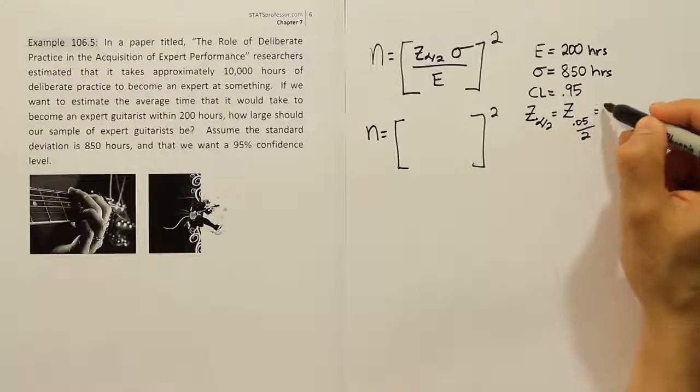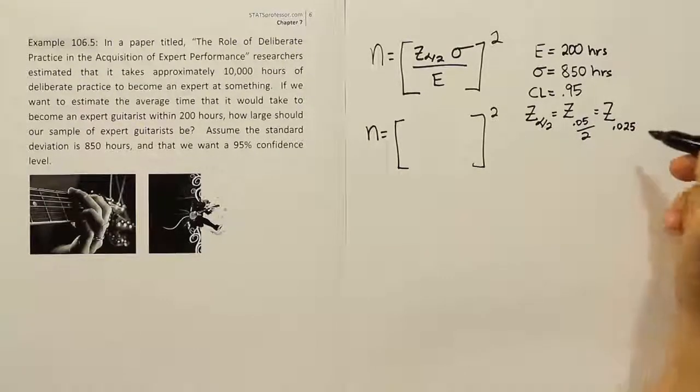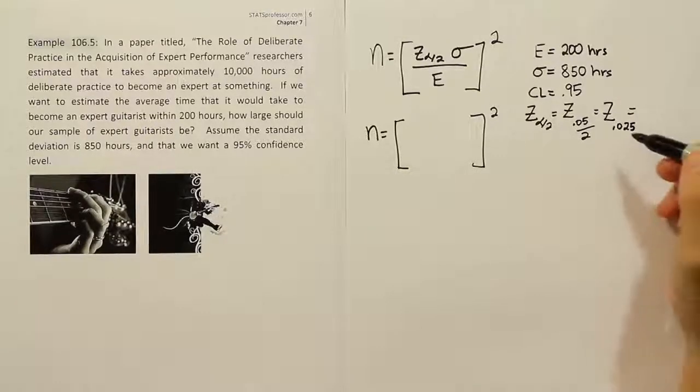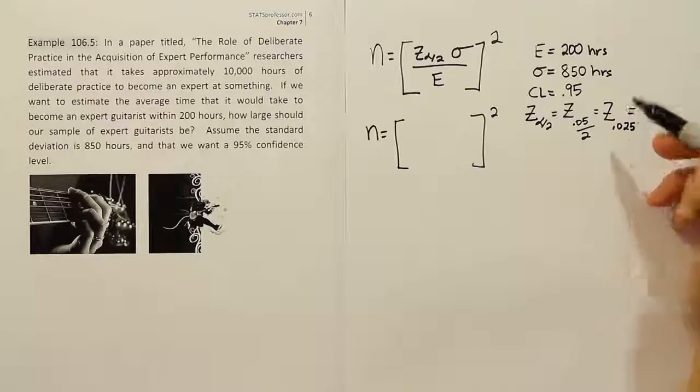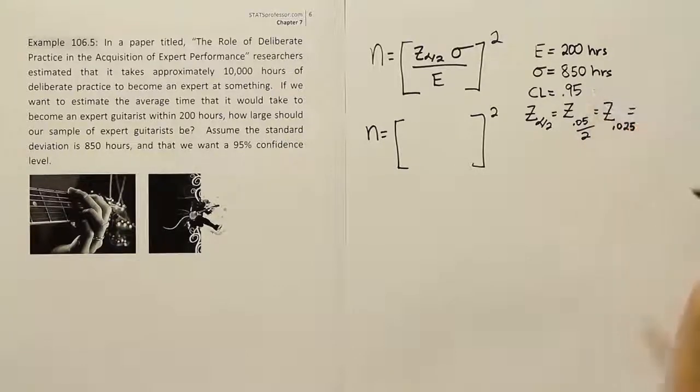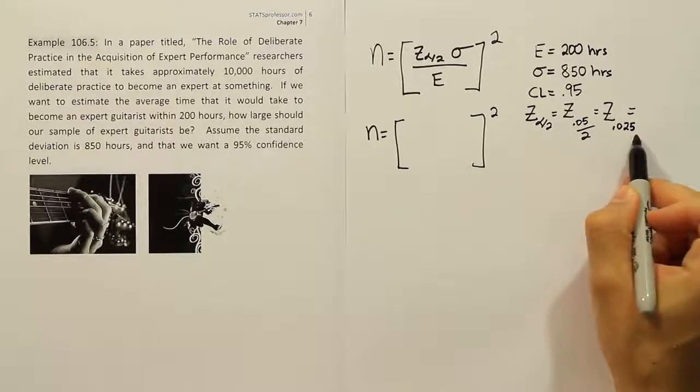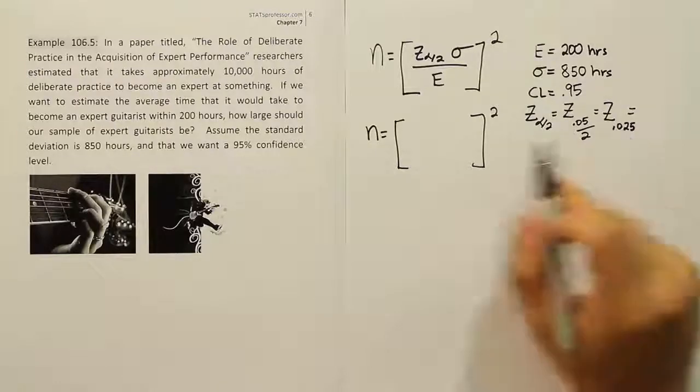We have to go to our Z table or T table to figure out what z_{α/2} is. Since the confidence level is one of the standard confidence levels, 95%, we're perfectly safe going to the T table to look it up. We'll look up this α/2 value of 0.025 on the T table.